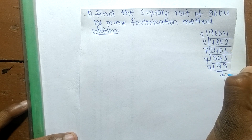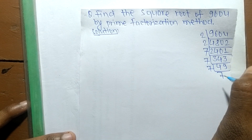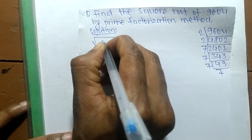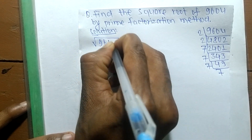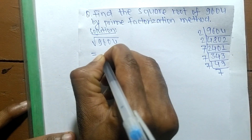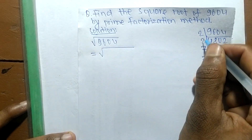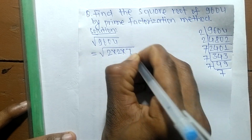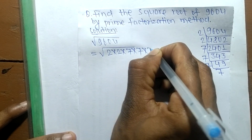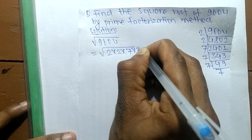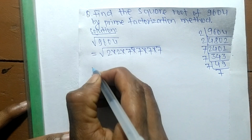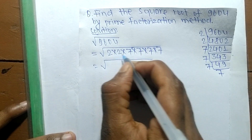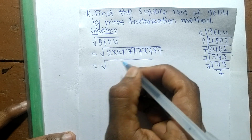7 times 7 is 49, so after finding the prime factors, we now find the square root. The square root of 9604 equals — from the prime factorization we can write it as 2 × 2 × 7 × 7 × 7 × 7. Since we are finding a square root, we make squares of all these prime factors.